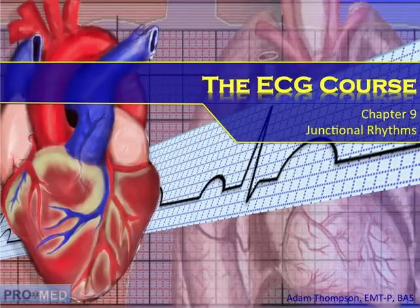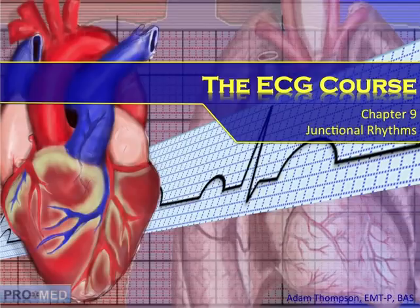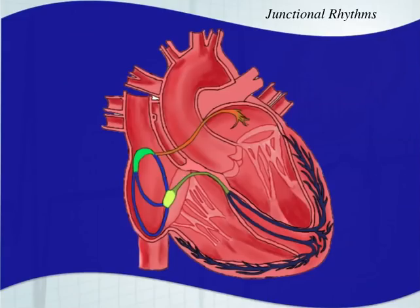Hello and welcome back to the ECG course. This is chapter 9. In this chapter we're going to be talking about junctional rhythms. So far we've talked about sinus rhythms and atrial rhythms. Now we're talking about the next type of rhythm, the next type of pacemaker, going inferior on the heart.